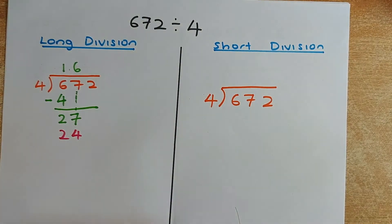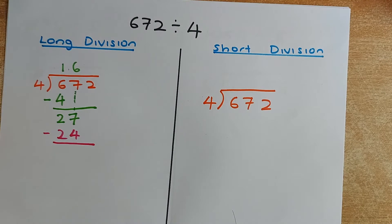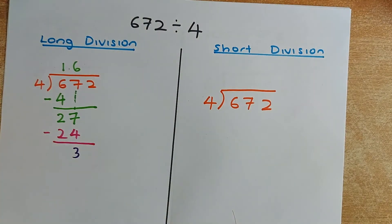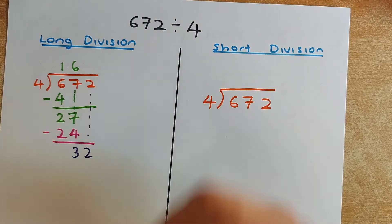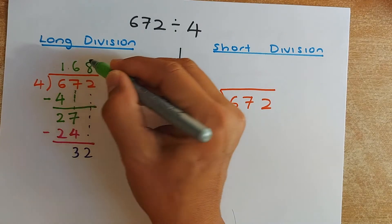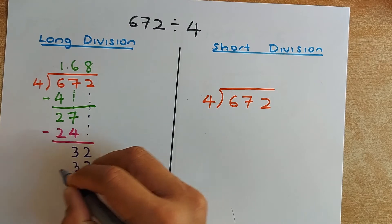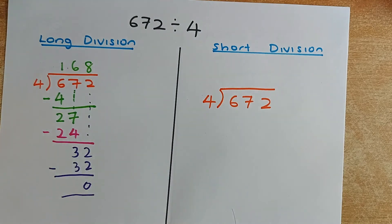Now the next step, the same thing — you are going to minus them. Draw a line. 27 minus 24 is going to be 3. Then bring down the 2, and that number becomes 32. 32 divided by 4 — if you know your 4 times table — is 8. 8 times 4 is 32, and there is no remainder. So the answer is 168.